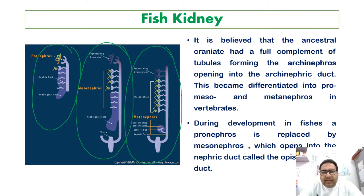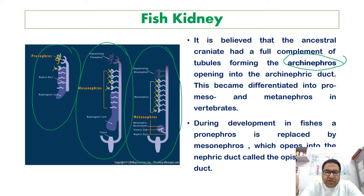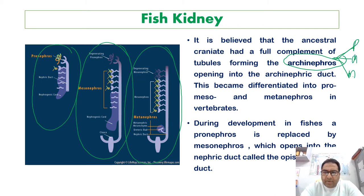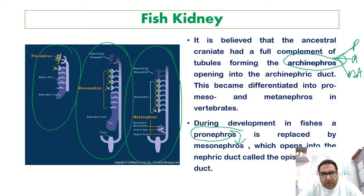It is believed that the ancestral craniate had a full complement of tubules forming the archinephros, which opens into the archinephric duct. This became differentiated into pronephros, mesonephros, and metanephros. During development in fishes, the pronephros is replaced by the mesonephros, which opens into the nephric duct, called the opistonephric duct.